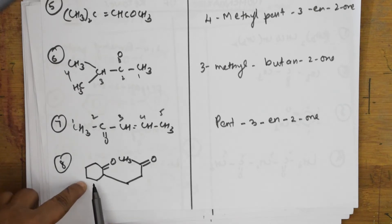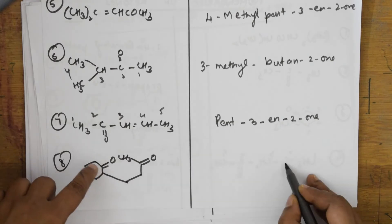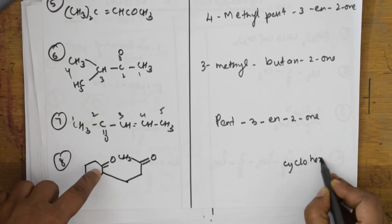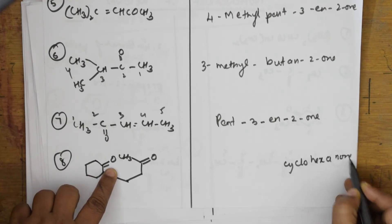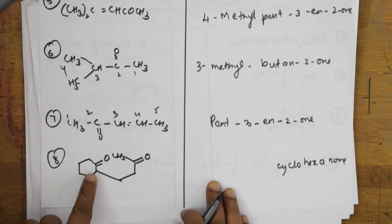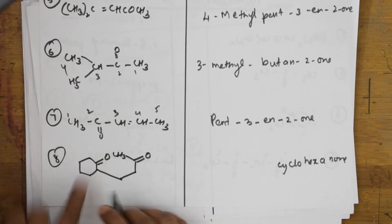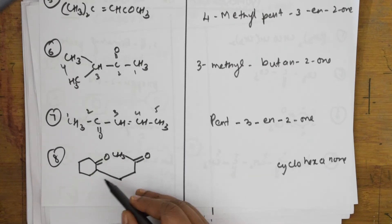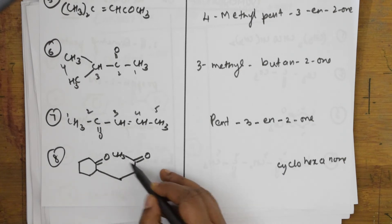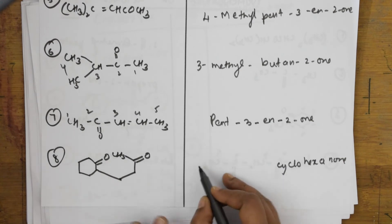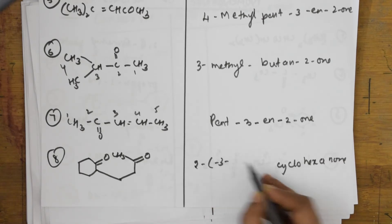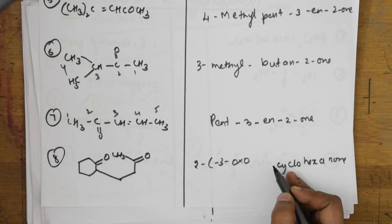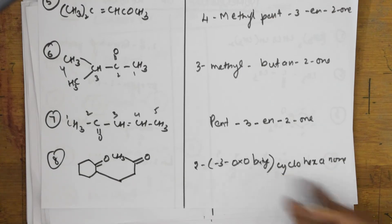Now let us name this: one, two, three, four, five — give minimum numbers, so this is pent-3-en-2-one. This next one is a different example with a cyclo group having six carbon atoms — cyclohexanone. After accounting for the cyclohexane part, we are left with an oxo group and a butyl group — four carbon atoms. So the name is (2,3-oxobutyl)cyclohexanone.